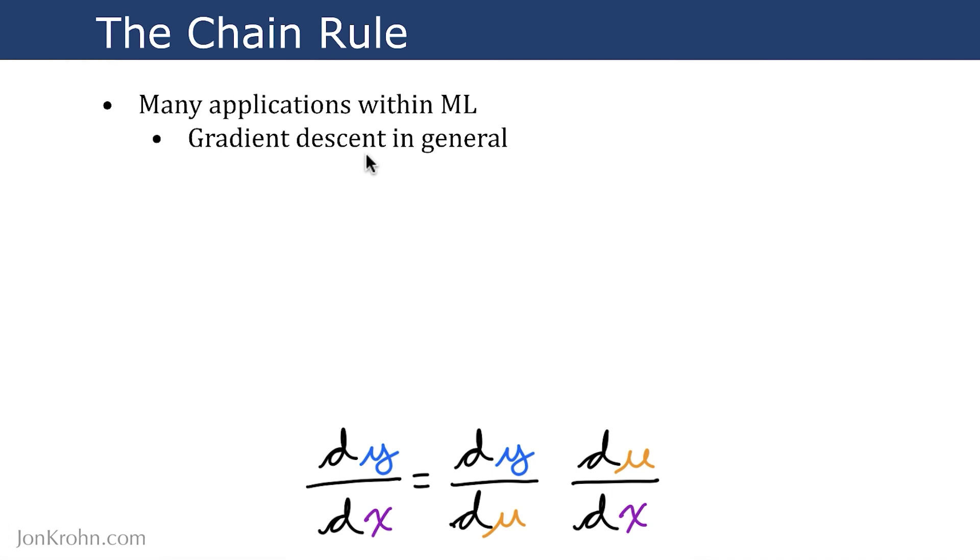And gradient descent is found in a huge number of machine learning algorithms from simple regression models all the way through to the most sophisticated deep learning models. It's very, very important.